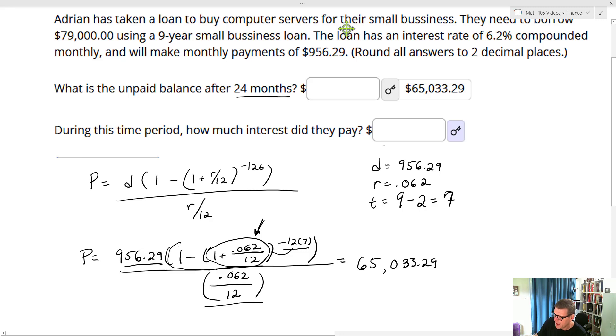Trick there, right, is to get that 24 months is how long you've taken. And then 9 was the original amount of time. So 9 minus 2, that's going to be 7.